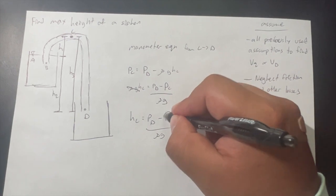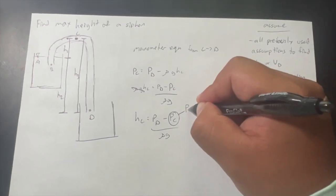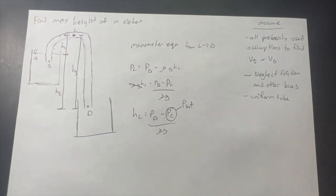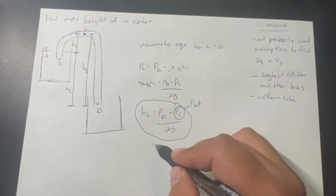Maximum height needs to be calculated for a siphon because once maximum height is exceeded, bubbles can form, causing a break in the siphon, and therefore the siphon fails.